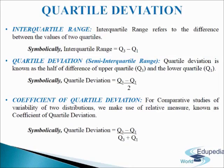Next, we come to coefficient of quartile deviation. Quartile deviation is an absolute measure of dispersion. For comparative studies of variability of two distributions, we make use of a relative measure known as coefficient of quartile deviation. It is used to compare the degree of variation in the series. It is defined as the ratio of the difference between the upper quartile and lower quartile to their sum. Symbolically, coefficient of quartile deviation equals Q3 minus Q1 divided by Q3 plus Q1.